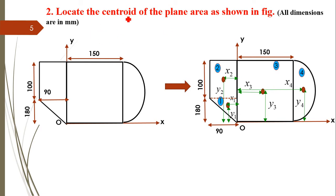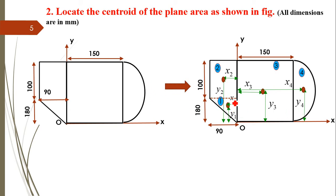Now let us solve the second problem: locate the centroid of the plane area as shown in the figure. Again, one irregular lamina is provided and we have to find the CG of this complete lamina. Let us divide the total lamina into standard shapes: the first shape is a right angle triangle, the second is a rectangle, the third is again a rectangle, and the fourth is a semicircle. Their respective CG points are CG₁, CG₂, CG₃, and CG₄, with distances from origin O labeled x₁,y₁ through x₄,y₄.